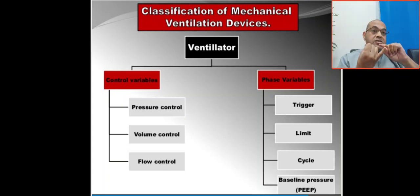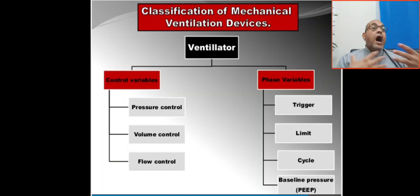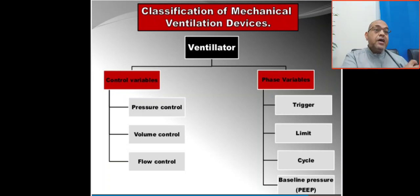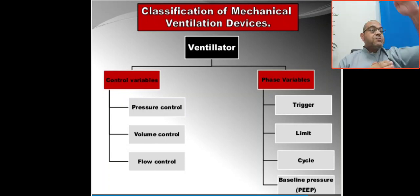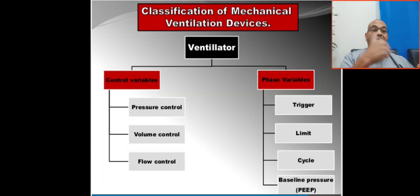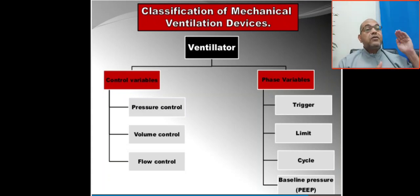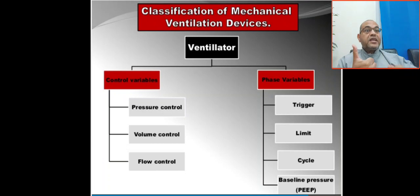The trigger is the beginning of the breath — who starts the breathing, the ventilator or the patient? There is time trigger, pressure trigger, and flow trigger. Flow trigger is preferred because it is less tiring for patients and very fast. The limit is the maximum inspiration target. The difference between limit and alarm: the ventilator cannot exceed the limit, but it can exceed the alarm threshold.